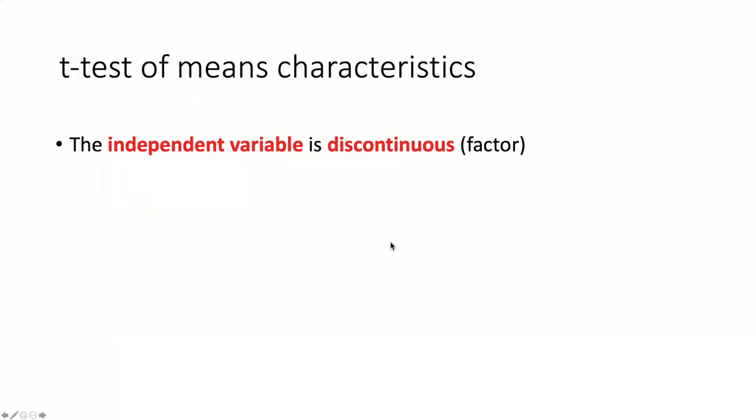Here are some characteristics of the t-test of means. The independent variable, which is the one that you're controlling in your experiment, is discontinuous. That means in R it's going to be represented as a factor. The dependent variable, that's the one we are measuring in the experiment, is numeric, so it's a continuous variable.